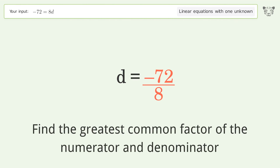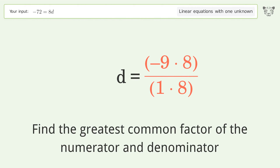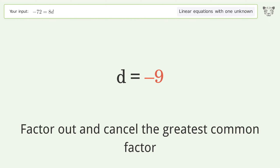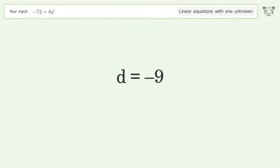Find the greatest common factor of the numerator and denominator. Factor out and cancel the greatest common factor. And so the final result is d equals negative 9.